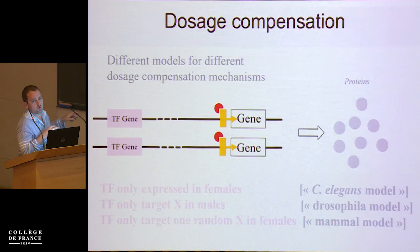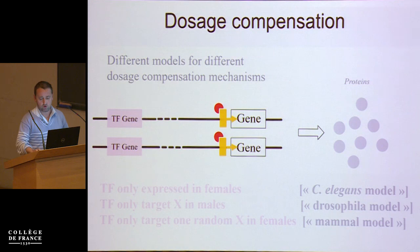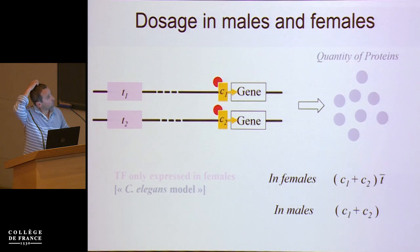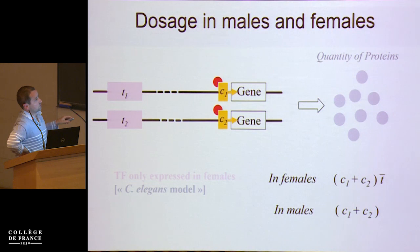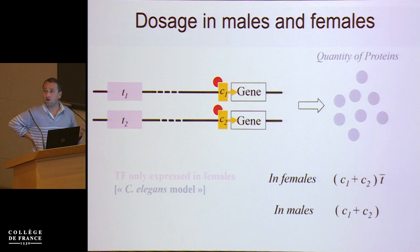To make a caricature, you've got the C. elegans model, the Drosophila model, and the mammal model, where the transcription factor is only expressed in females for one, will only target the X in males for another, and will only target one random X in females for the third. I will concentrate only on the first one. For dosage in females, the overall amount of protein produced would be C1 plus C2 times T-bar — the mean of those T values — but only in females, because the trans-acting factor is only acting in females.